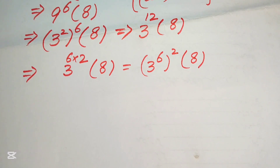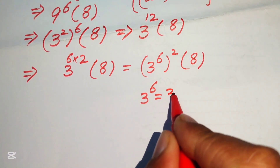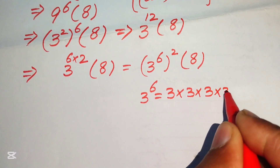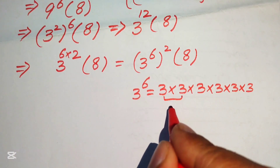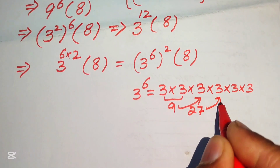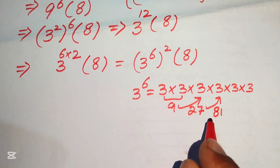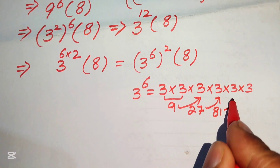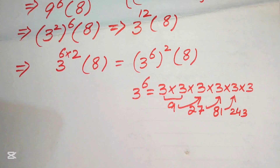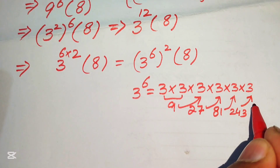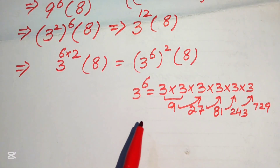Using repeated multiplication: 3^6 means 3 multiplied 6 times. So: 3 times 3 is 9, times 3 is 27, times 3 is 81, times 3 is 243, times 3 is 729. Therefore 3^6 equals 729.